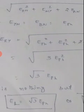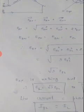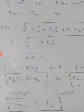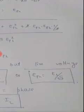So that is equal to √3 times E_phase. Therefore, in star connection, line voltage is nothing but √3 times the phase voltage, or phase voltage is equal to line voltage divided by √3.